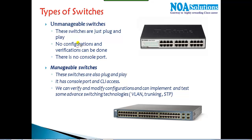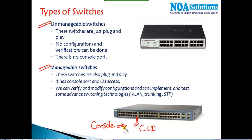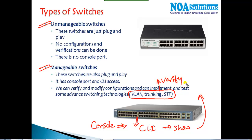In switches we have two categories: unmanageable switches and manageable switches. The major difference is that manageable switches have a command line — they have a console port just like routers — and we can verify show commands and do advanced switching concepts like VLANs, trunking, and spanning tree. We can verify how they work, make changes, and optimize them.